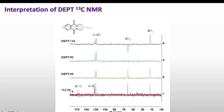Taking the general carbon NMR, we get six peaks — two peaks in the saturated carbon region, three peaks in the aromatic region, and one peak in the carbonyl region. Taking DEPT 45, one peak goes missing — the one in the carbonyl region — showing that this peak belongs to a quaternary carbon. In DEPT 90, which shows peaks only for CH carbons, we get only two peaks, meaning there are only two CH carbons in the molecule.